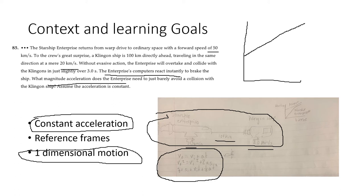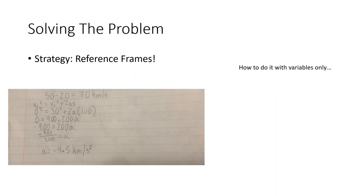The Starship Enterprise starts out faster and then starts to slow down like that before they touch. To solve the problem, our strategy is going to be reference frames.